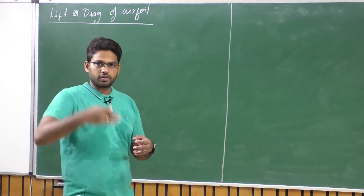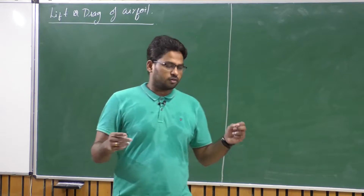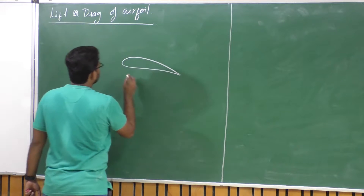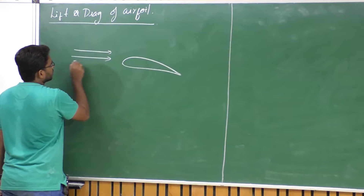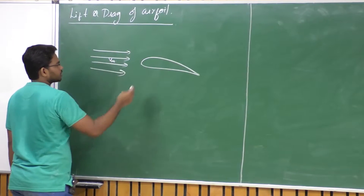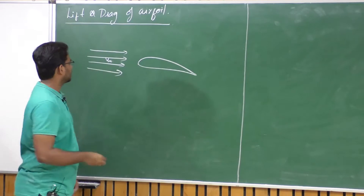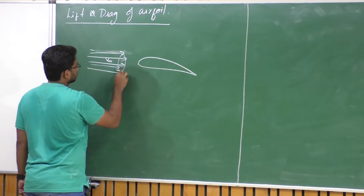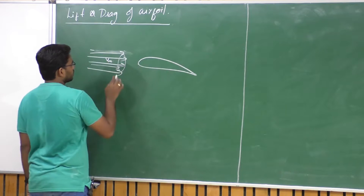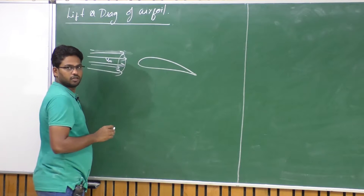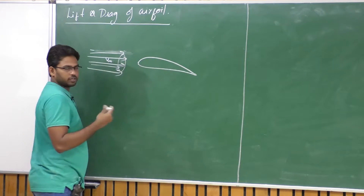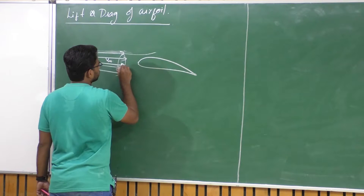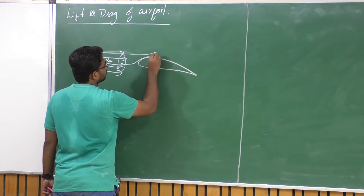Let us consider an airfoil, which is a cross section of the wing as most of you are aware. Let us place this airfoil in the flow with a free stream velocity of V infinity — which means the airfoil is also moving at velocity V infinity. Let us assume that this flow happens in a stream tube. As soon as this stream tube encounters the leading edge of the airfoil, the parent stream tube will get split into two daughter stream tubes.